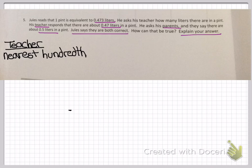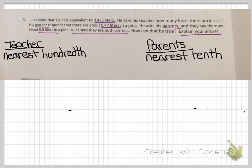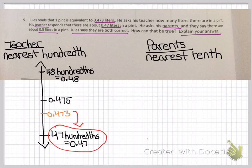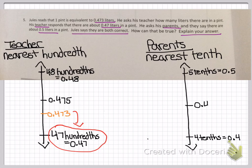The teacher rounded to the nearest hundredth: 0 and 47 hundredths. His parents rounded to the nearest tenth. For the teacher's number line: at the bottom you have 47 hundredths, or 0.47; at the top you have 48 hundredths, or 0.48; in the middle you have 0.475. The value falls below the midpoint, so it rounds down to 47 hundredths — the teacher was correct. For the parents: at the top you have 5 tenths, or 0.5; at the bottom, 4 tenths, or 0.4; in the middle, 45 hundredths. The value falls above the midpoint, so it rounds up — the parents were also correct. Both answers are right because they rounded to different place values.